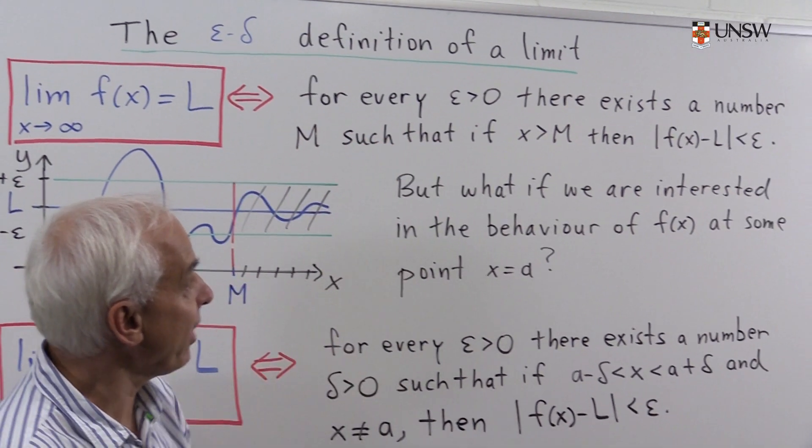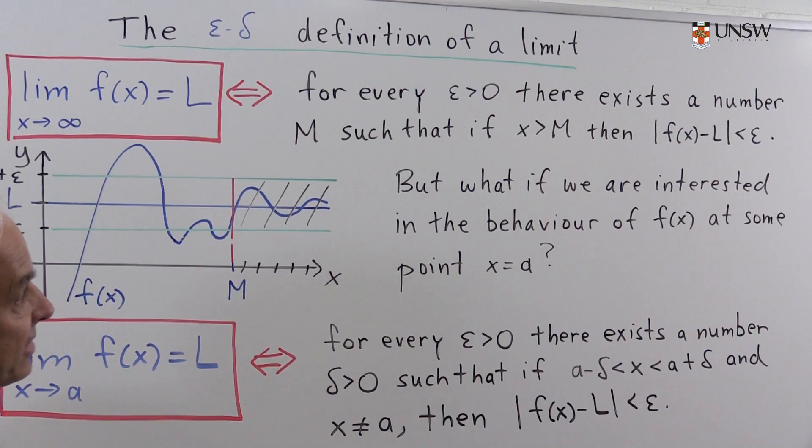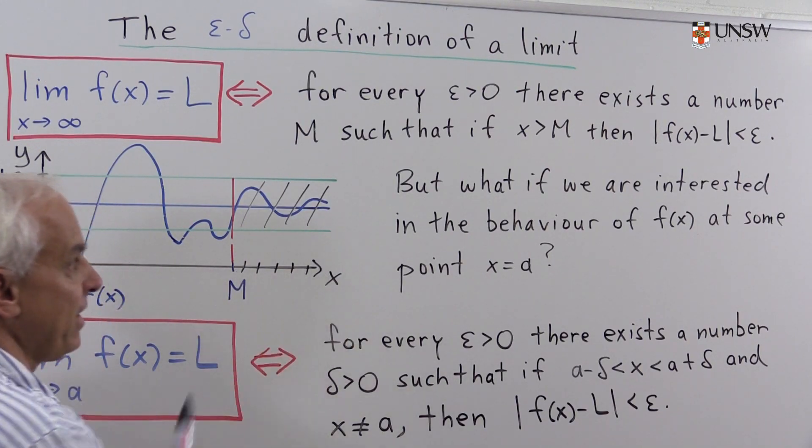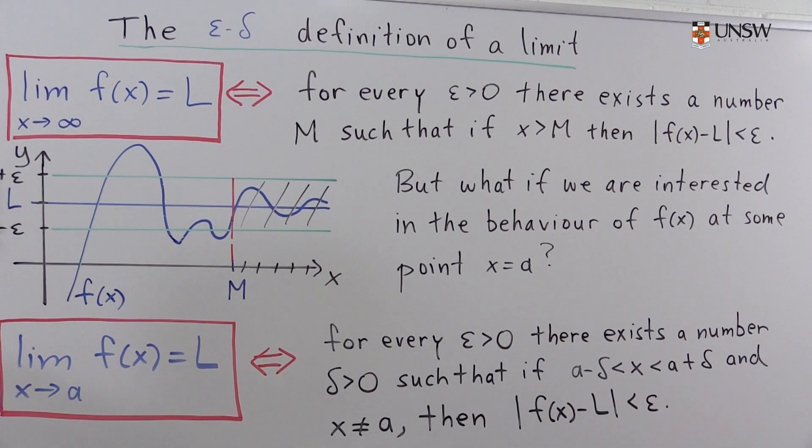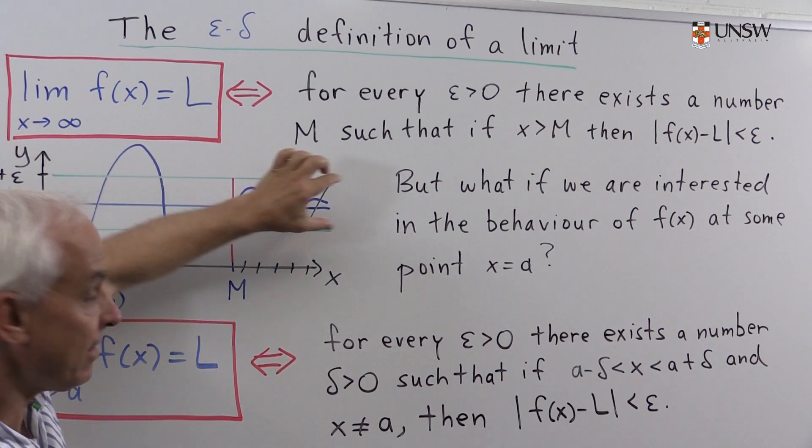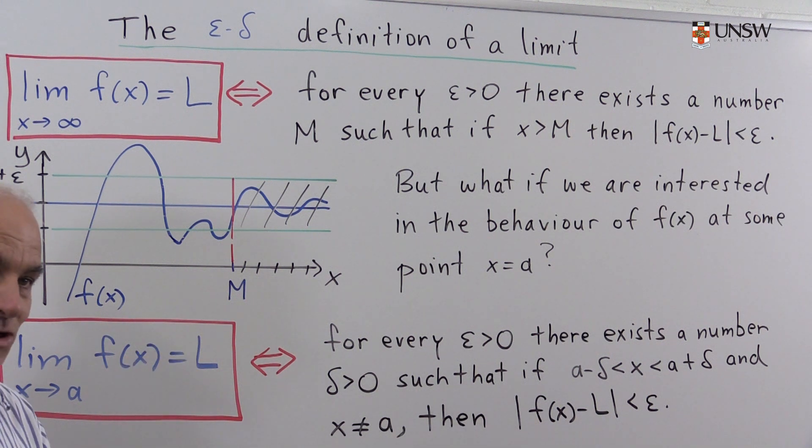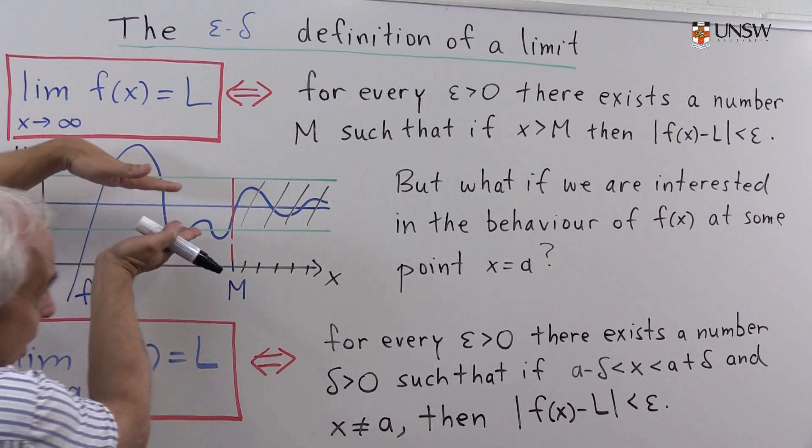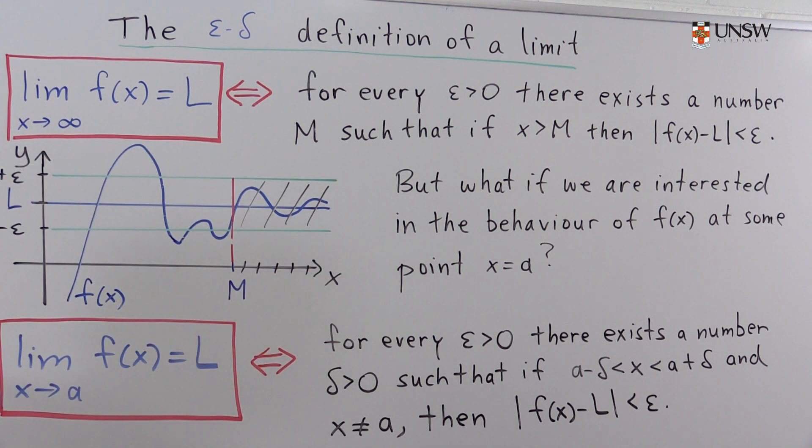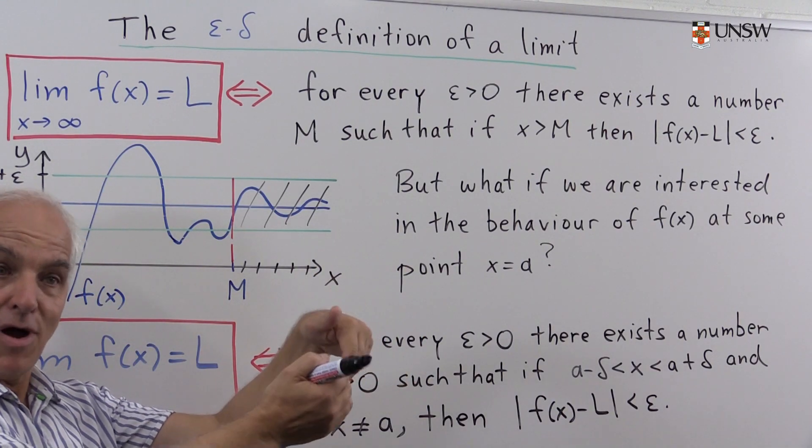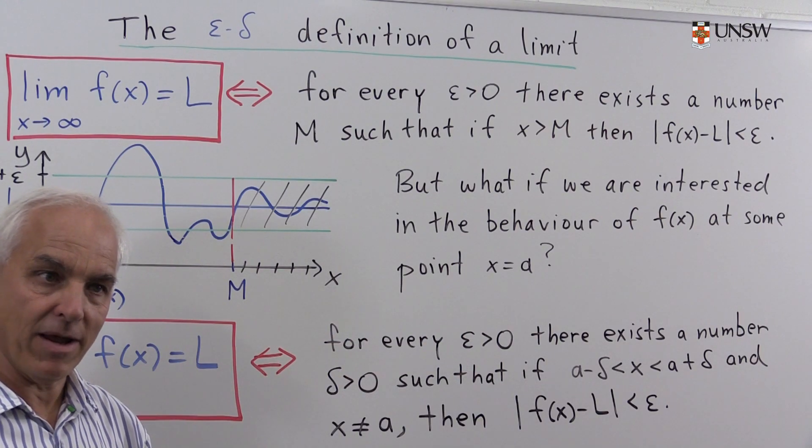What does that mean precisely? It means that for every epsilon greater than zero, there exists a number M, such that if x is bigger than M, then f of x minus L, in absolute value, is less than epsilon. In other words, there's a band around L with epsilon in either direction. So that if we want to get our function's values in that band, we can do so by choosing a suitable point M, and beyond that we'll be in the required band.